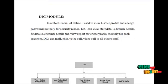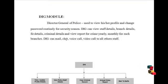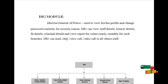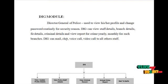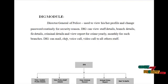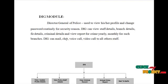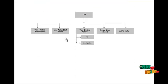The next model is the DIG model. The DIG can view and update their own profile details and change password routinely for security reasons. DIG can view staff details, branch details, FIA details, criminal details, and view reports for crime on a yearly and monthly basis. DIG can mail, chat, voice call, or video call other users through mail services or through Skype services. The data flow diagram of DIG is as shown below.